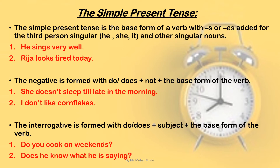The interrogative is formed with do or does, plus subject, plus the base form of the verb. We start the question with a helping verb, then the subject, then the base form of the verb. For example: Do you cook on weekends? 'Do' is the helping verb, 'you' is the subject, and 'cook' is the base form. Does he know what he is writing? 'Does' is the helping verb, 'he' is the subject, and 'know' is the base form of the verb.